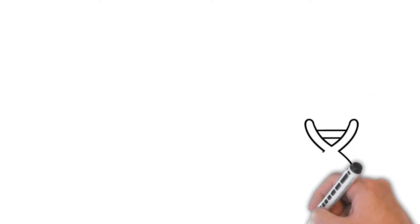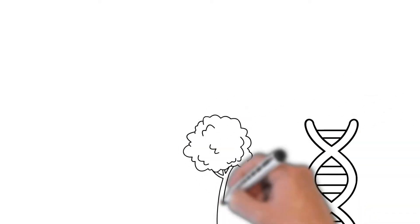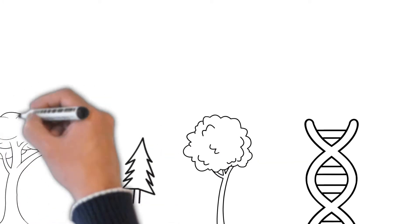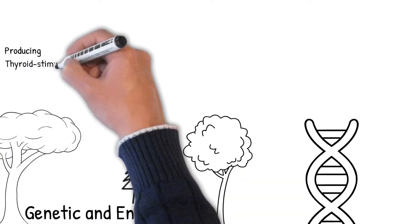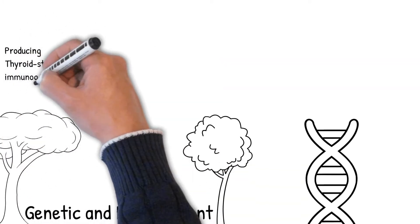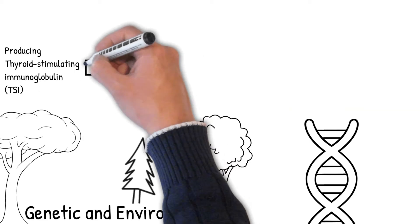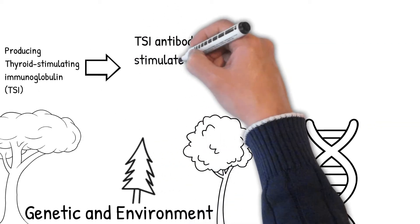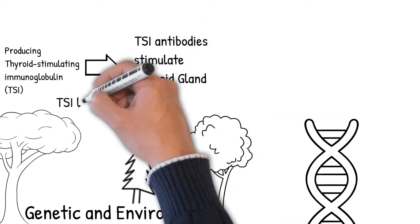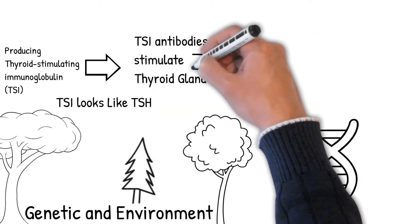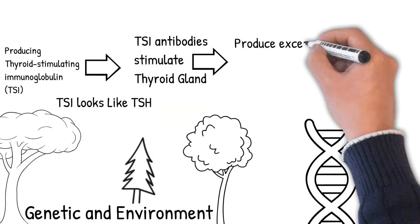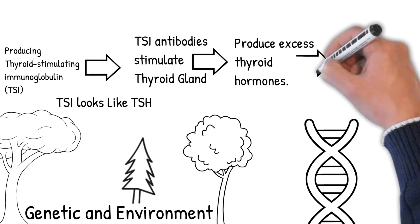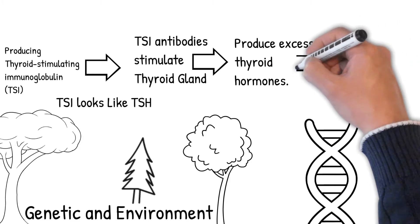Causes are multi-component — a combination of genetic and environmental factors. Graves' disease may be triggered by physical or emotional stress, infection, or giving birth. The mechanism of the disease involves producing antibodies called thyroid-stimulating immunoglobulin (TSI), which has a similar effect to thyroid-stimulating hormone (TSH). These TSI antibodies affect the thyroid gland to produce excess thyroid hormones.